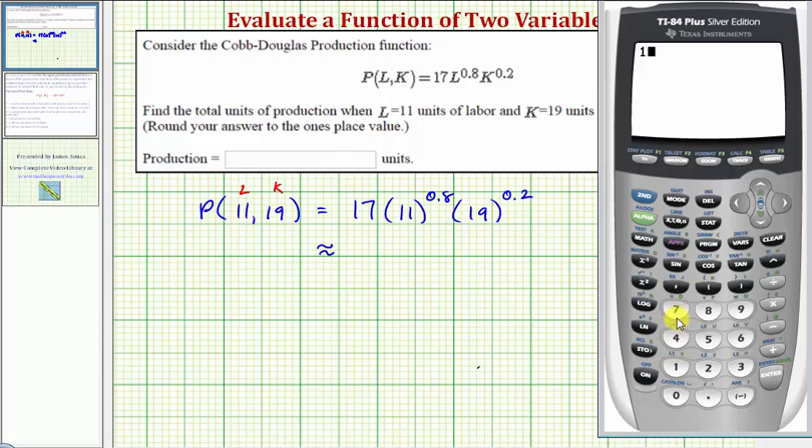We enter 17 × (11)^0.8 × (19)^0.2 into the calculator. The result rounds up to 209.